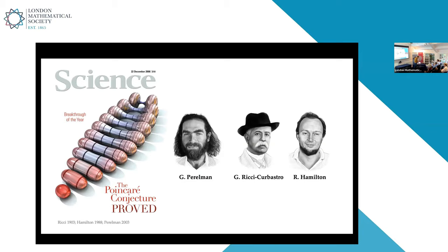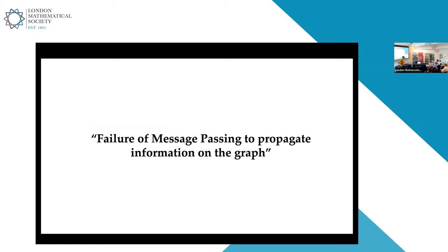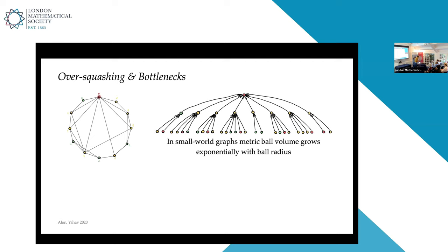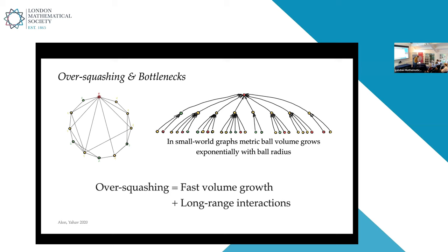Ricci flows were originally invented by Hamilton to prove the Poincaré conjecture — characterizing high-dimensional topological spheres — and that is exactly the mechanism Perelman used to prove it. What does this have to do with graph neural networks? Remember that some graphs are unfriendly for message passing — this is over-squashing. In real-world graphs like small-world networks or trees, the graph volume grows very fast exponentially with distance. Over-squashing arises when we have fast volume growth combined with the need to account for long-range interactions — information from many nodes must be squeezed through a bottleneck, and is lost.